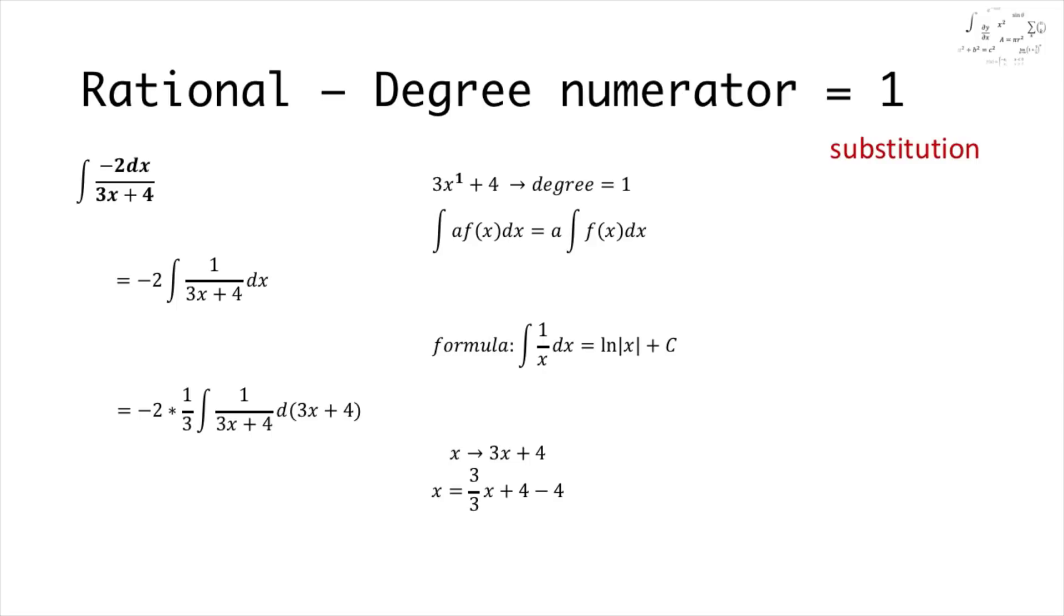Therefore we are going to get u equals 3x plus 4 instead of x. To get here without changing the outcome of the exercise, we get x is equal to u over 3 minus 4 over 3, where we will keep the 3x plus 4.